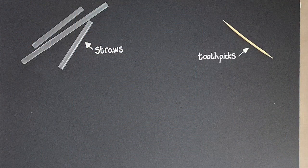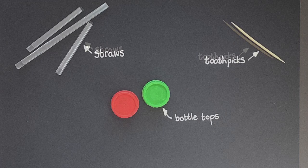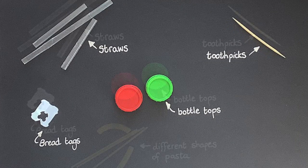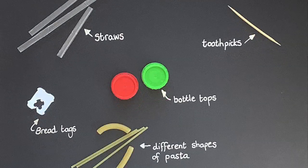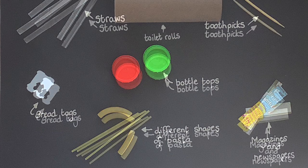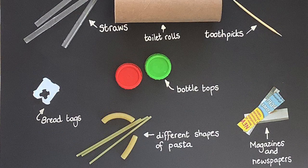There are lots of materials you can use: straws, toothpicks, bottle tops, bread tags, different shapes of pasta, magazines and newspapers, and even empty toilet rolls. Have a look around your house and see what you can find.